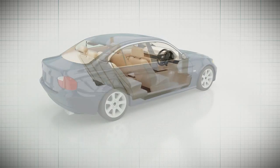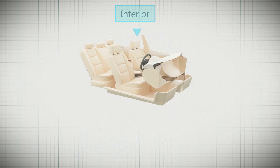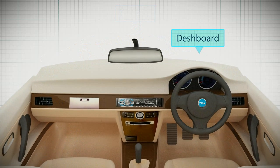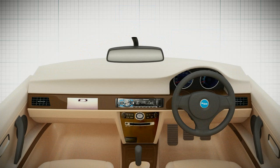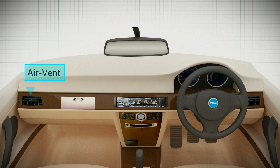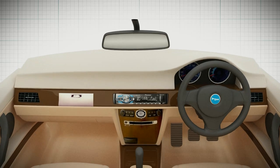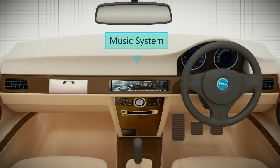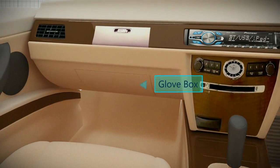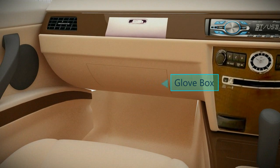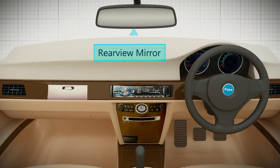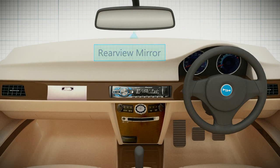Now let us look at the interior of the car. The panel in front is called the dashboard. In the dashboard there can be an air conditioning system along with air vents, music system and other accessories. There is a glove box in it for storage. It also consists of a rear view mirror and a light on the ceiling.